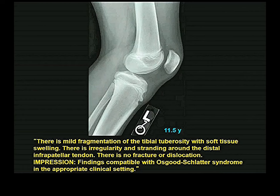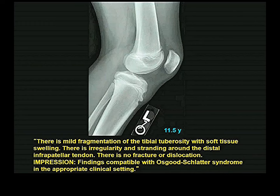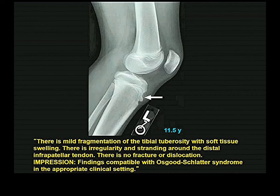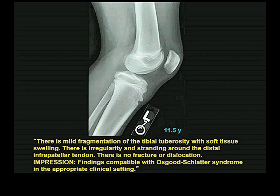This leads to Osgood-Schlatter syndrome, which happens in athletically inclined youngsters. You get an inflammatory response right at the portion of the proximal epiphysis representing the tuberosity of the tibia where the patellar tendon inserts. The radiologist identifies it as Osgood-Schlatter syndrome. It is painful and is usually resolved by limiting activity — if you rest and don't run and jump around, it usually gets better.